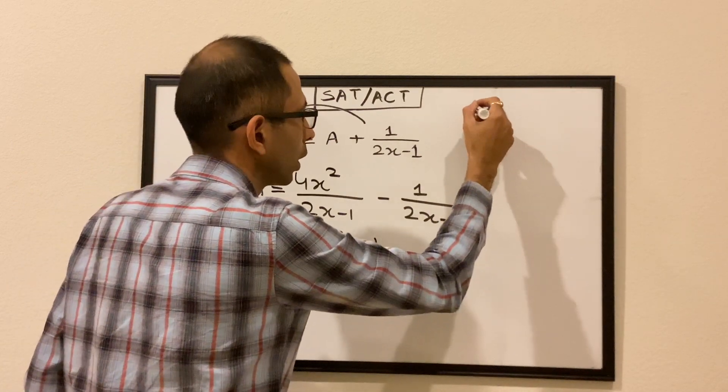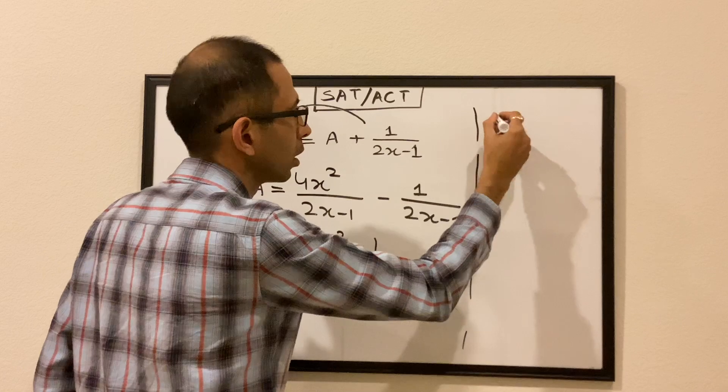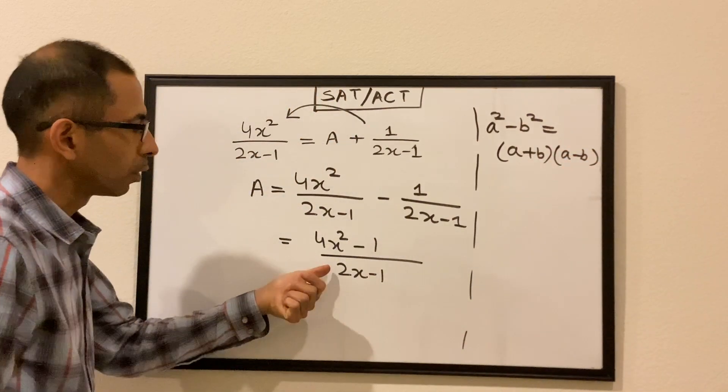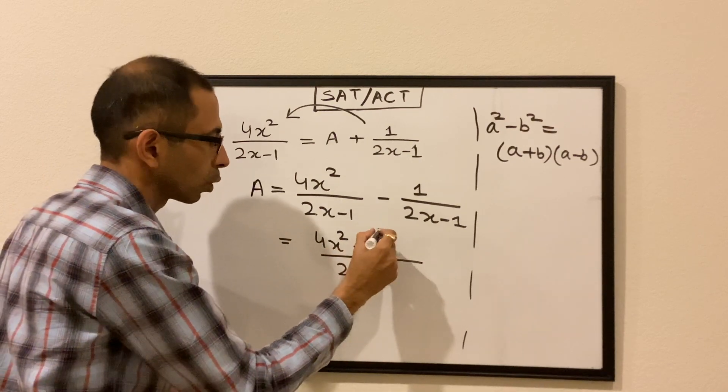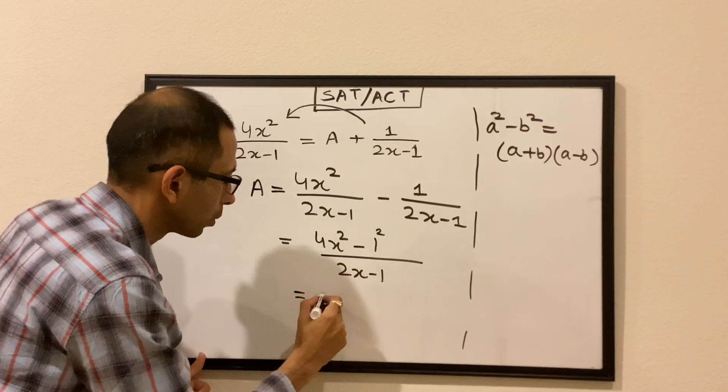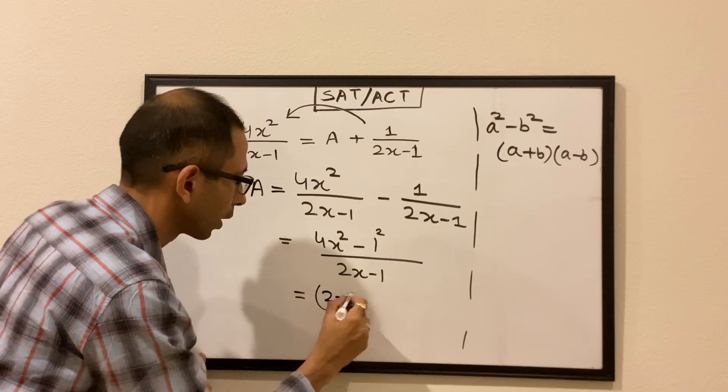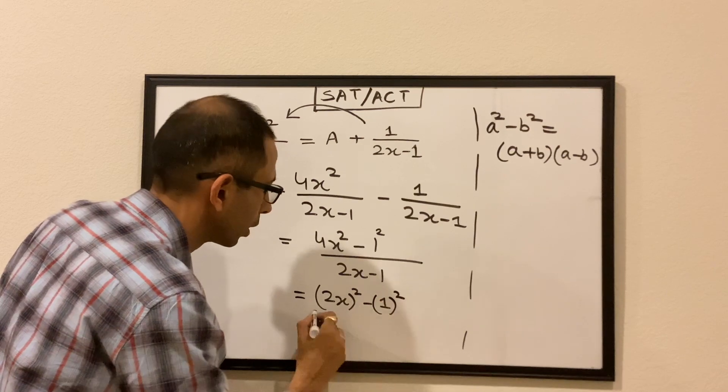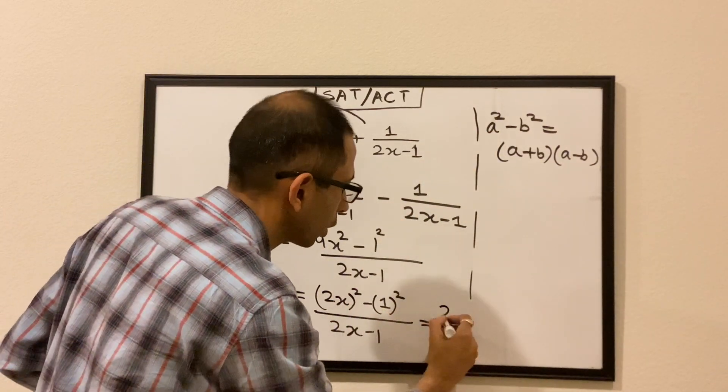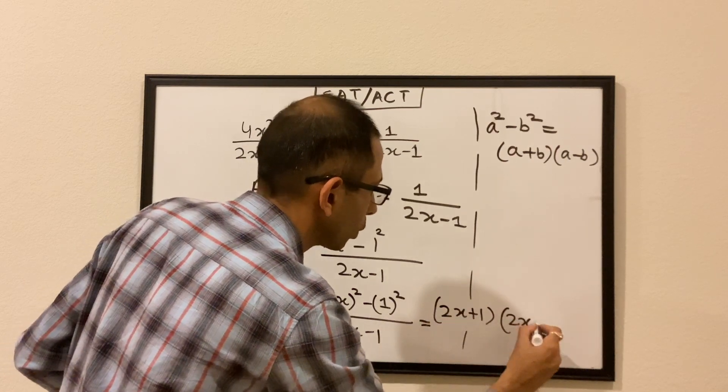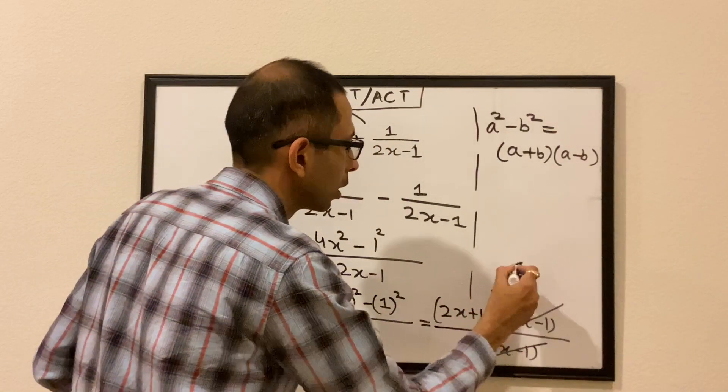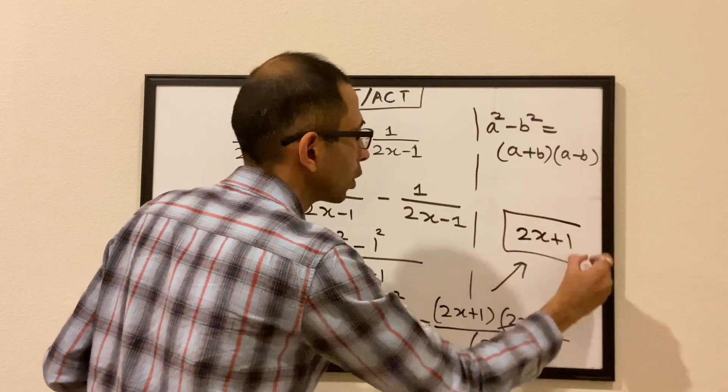Now we are going to use the difference of squares. The difference of squares says a square minus b square is equal to (a plus b) times (a minus b). And if you look at the numerator a little more closely, we can write 1 as 1 square. So we can try to apply the difference of squares here, in which case the numerator becomes (2x) whole square minus 1 square divided by (2x minus 1). And the numerator from the difference of squares formula becomes (2x plus 1) times (2x minus 1) divided by (2x minus 1). These two terms get cancelled out and hence the value of a comes out to be 2x plus 1.